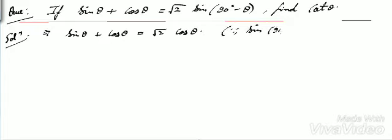So we will write sin(90° - θ) as cos θ. So sin θ + cos θ = √2 cos θ. Right.